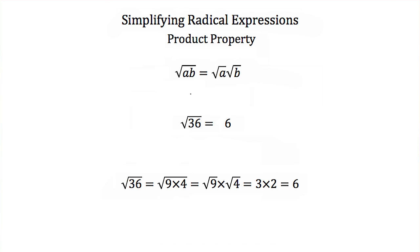Another method for simplifying radical expressions is to use the product property. The product property tells us that if we have the square root of two numbers multiplied together, that's equal to the square root of each of those numbers multiplied together. For example, the square root of 36 equals 6. But if we didn't know that, we could break 36 into 9 times 4, and rewrite it as the square root of 9 times the square root of 4. That's 3 times 2, which equals 6.